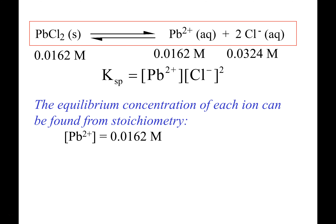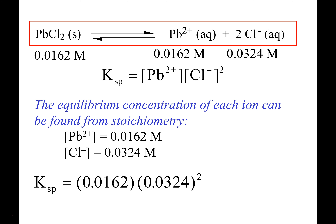Plugging into the Ksp expression: Ksp = [Pb²⁺][Cl⁻]². We substitute 0.0162 for Pb²⁺ and 0.0324 for Cl⁻, squaring the chloride concentration because that's its stoichiometric coefficient. The result is a Ksp of 1.70 × 10⁻⁵. These values are unitless, just like Kc values are unitless.